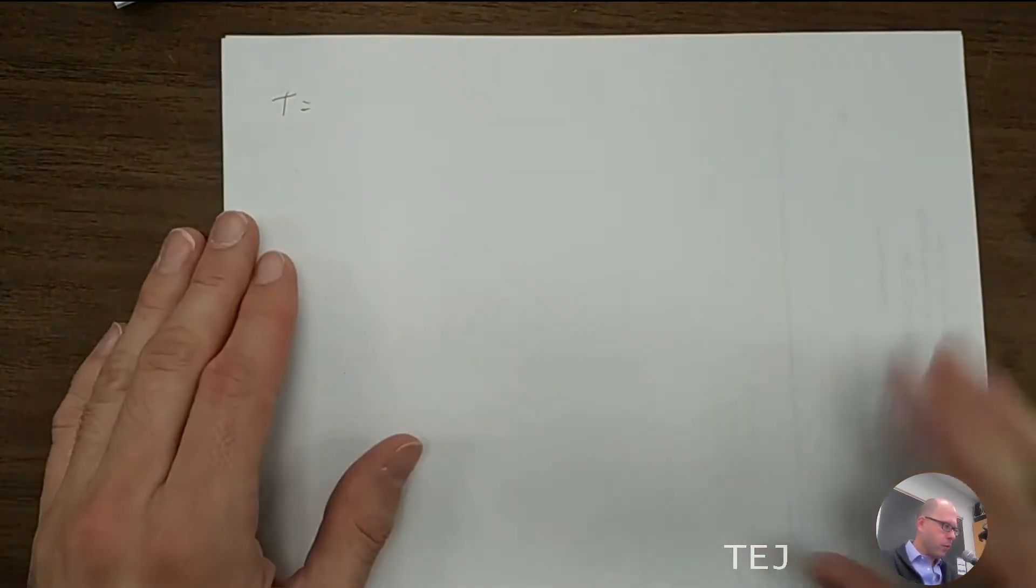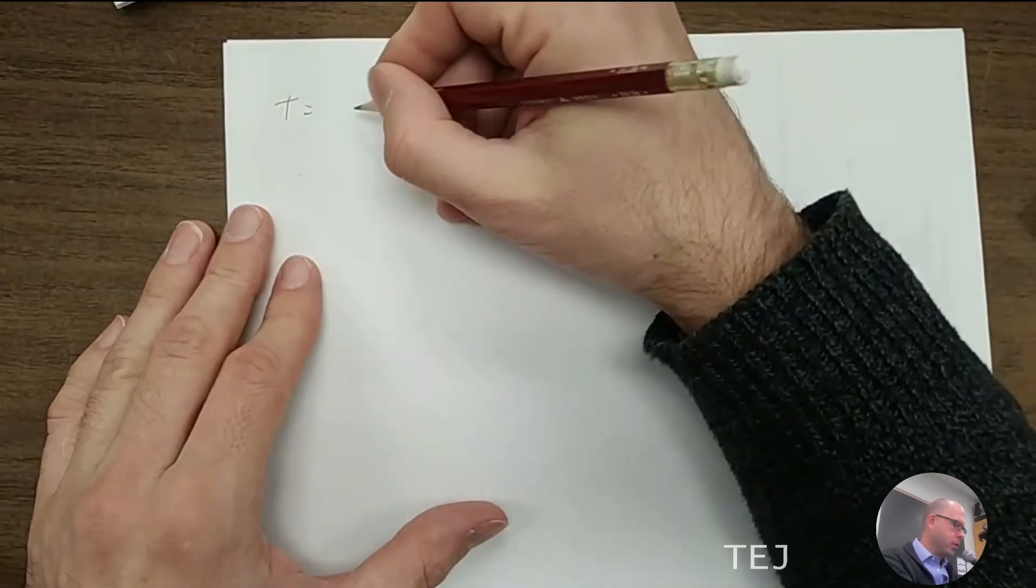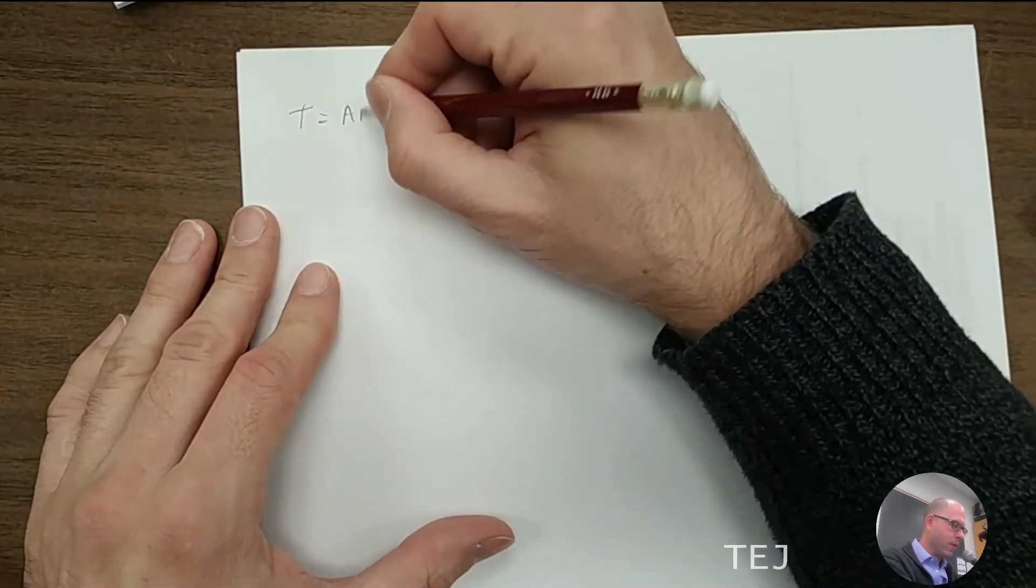Here are three examples of four-variable Karnaugh maps, very similar to three-variable. It's the same process. We just have one extra variable, and we'll see how to handle that. So I'm going to start off with my first example here, and it's going to be t equals, so we have a, b, c, and d.